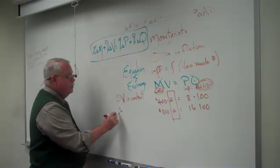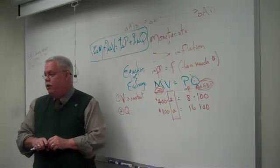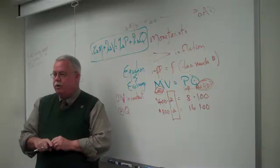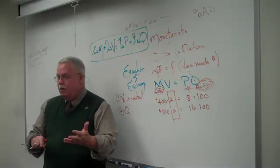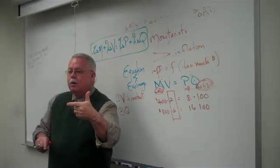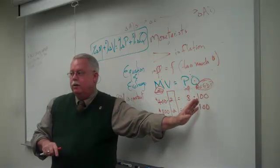Second assumption has to do with GDP. Q is GDP. One of the neoclassical school, what does the neoclassical school assume about output, GDP? At what level of GDP will we operate at? Full employment.